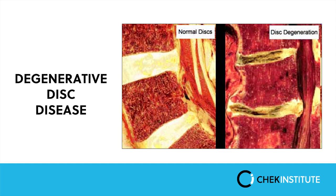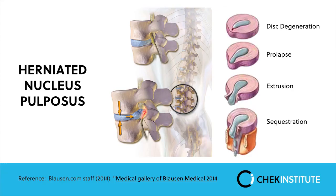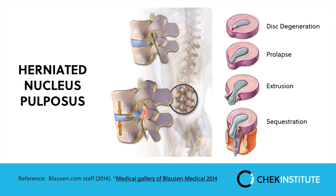Next is the herniated nucleus pulposus. The disc has an annulus on the outside and a nucleus in the middle. Imagine a disc like a jam donut — or in America, a jelly donut. If you put pressure on the front of the donut, the jam gets pushed posteriorly, backwards. That's essentially what happens with the discs.